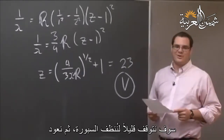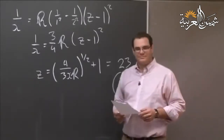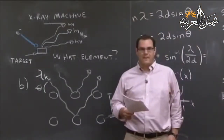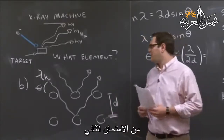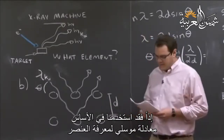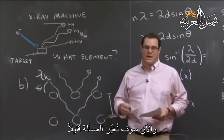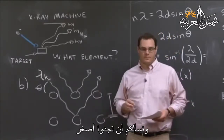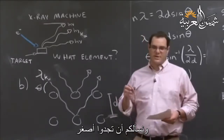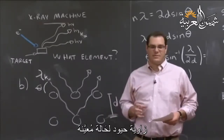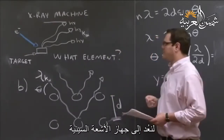That's the answer to part A. We're going to take a second and clean up and come right back to finish the problem. We're going to start part B now of problem two on the second exam. We've used the Moseley equation to find the element, and now we're going to ask you to find the smallest diffraction angle for a particular situation.